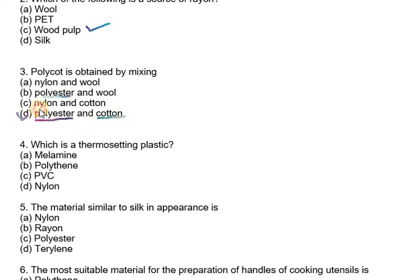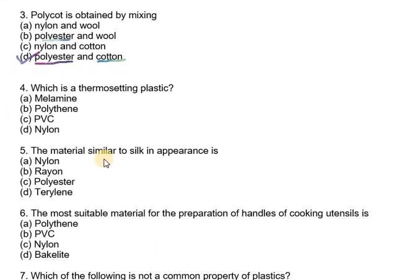Which is a thermosetting plastic? We know that thermosetting plastic has the ability to resist fire and tolerate heat, for which it is extensively used to make tiles, kitchenware, and fabrics. So therefore out of these four, we have melamine as thermosetting plastic.